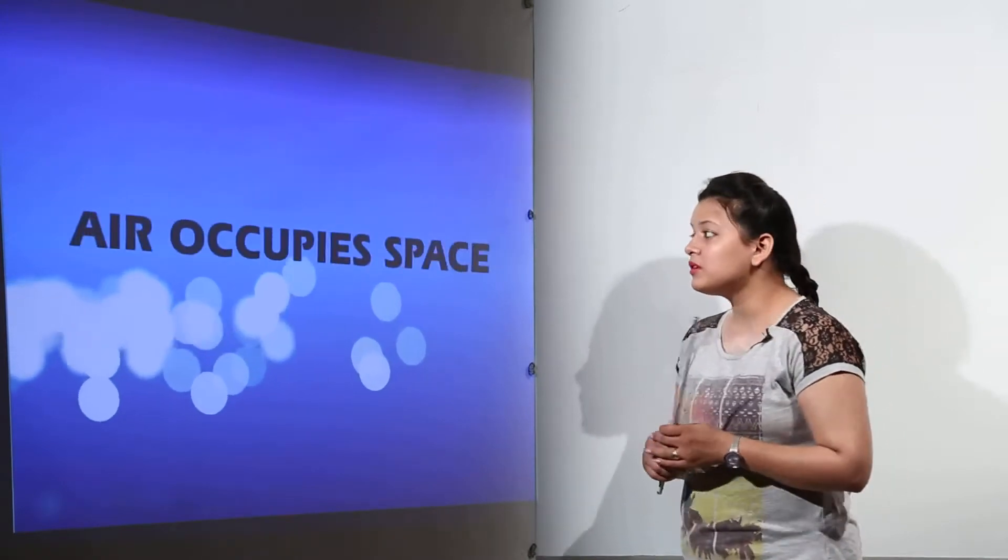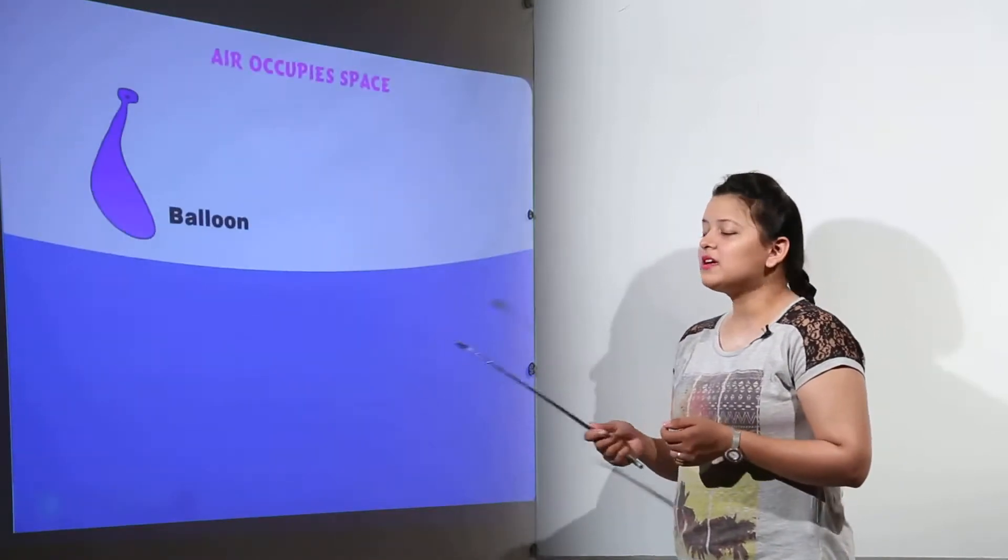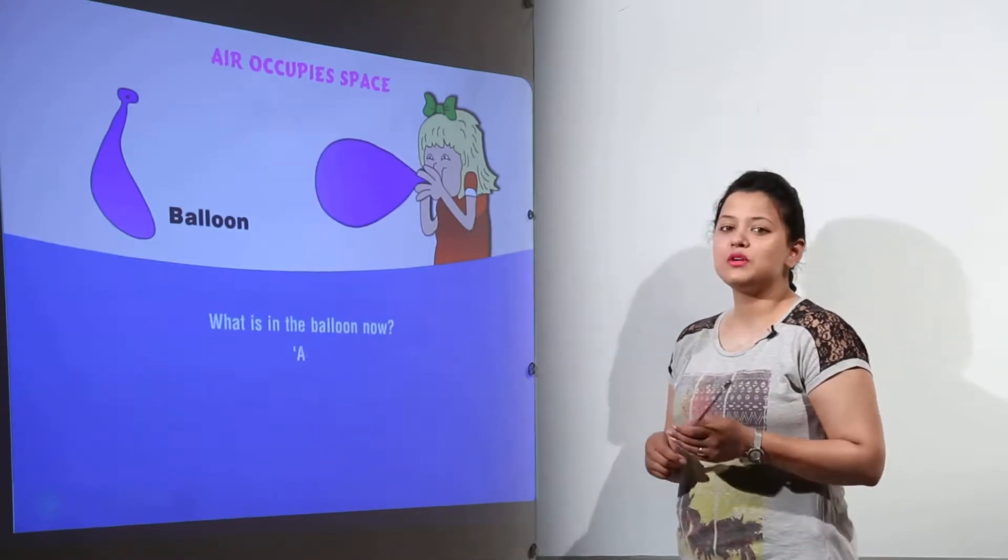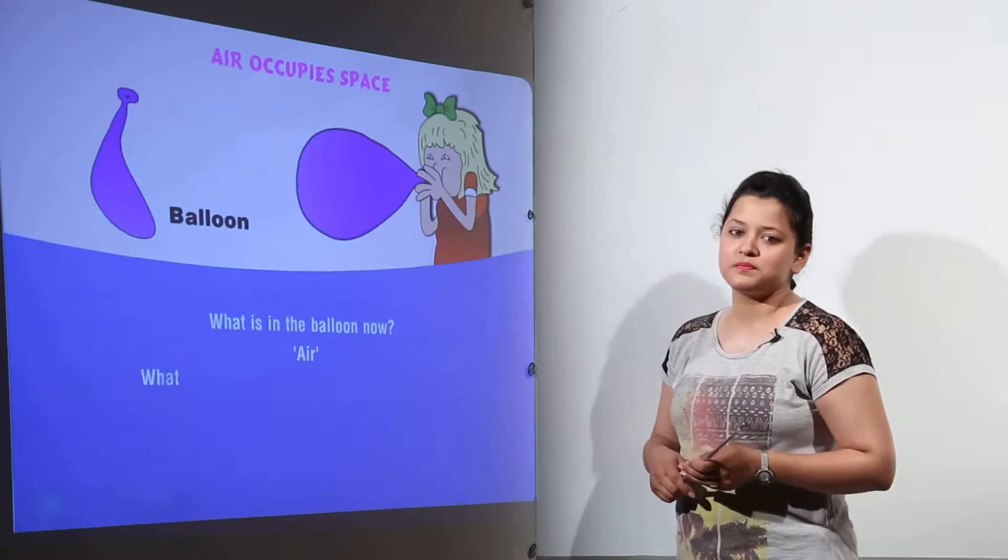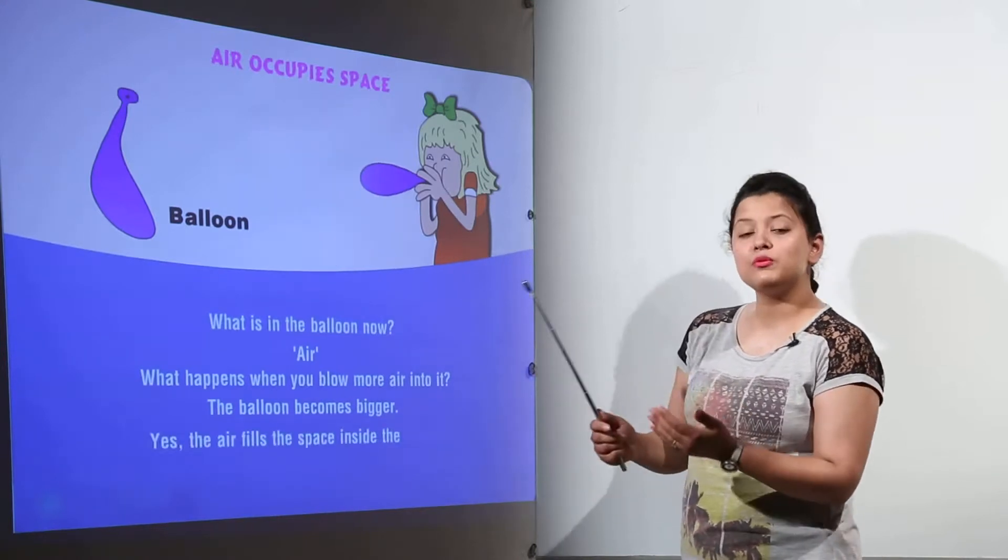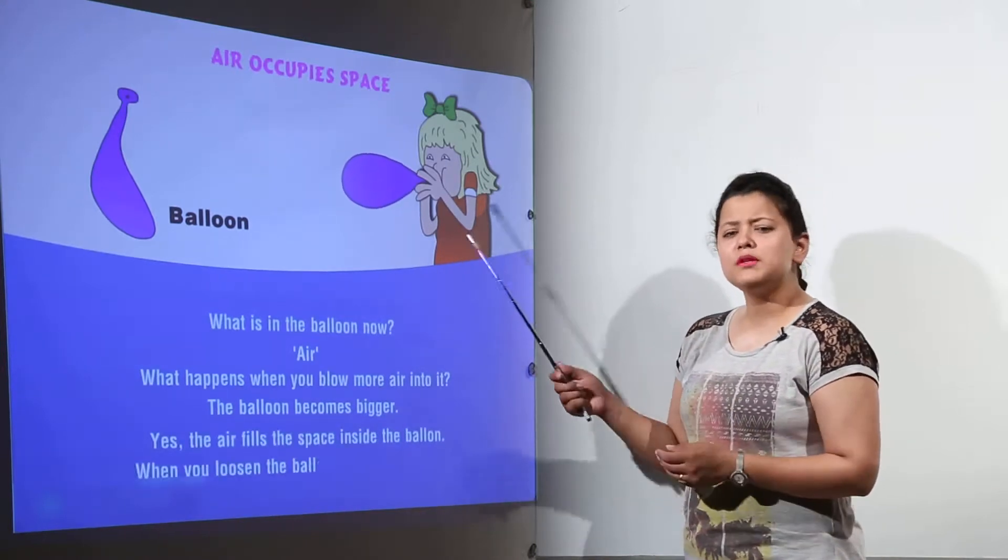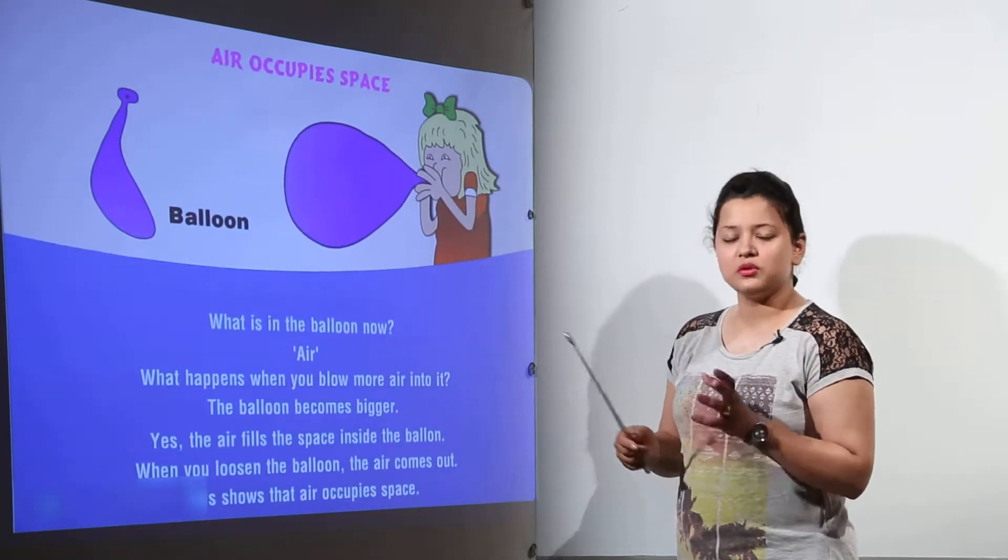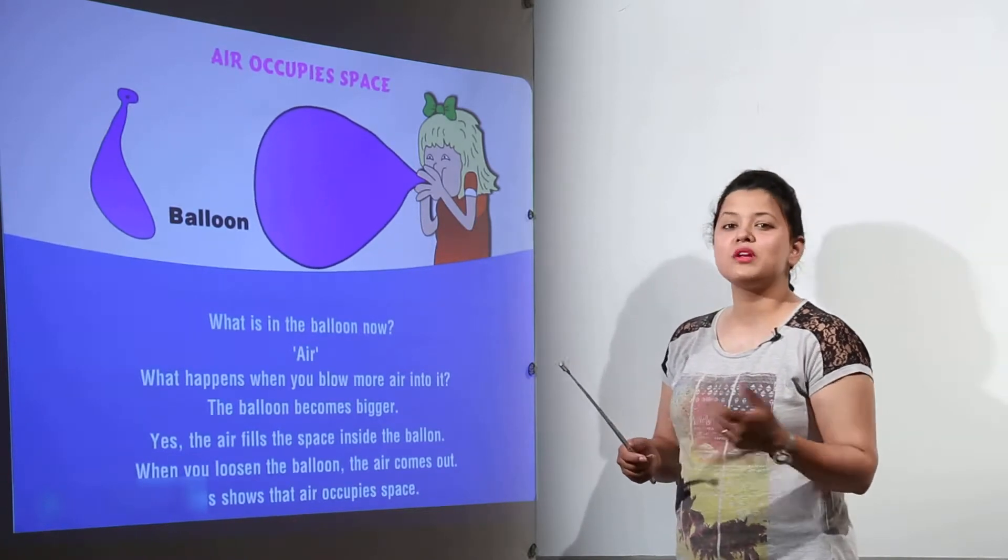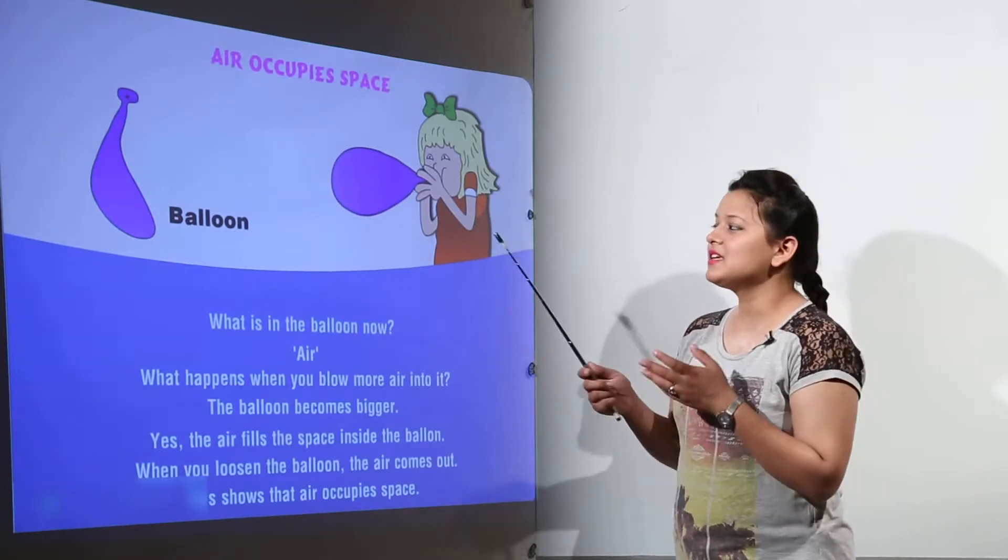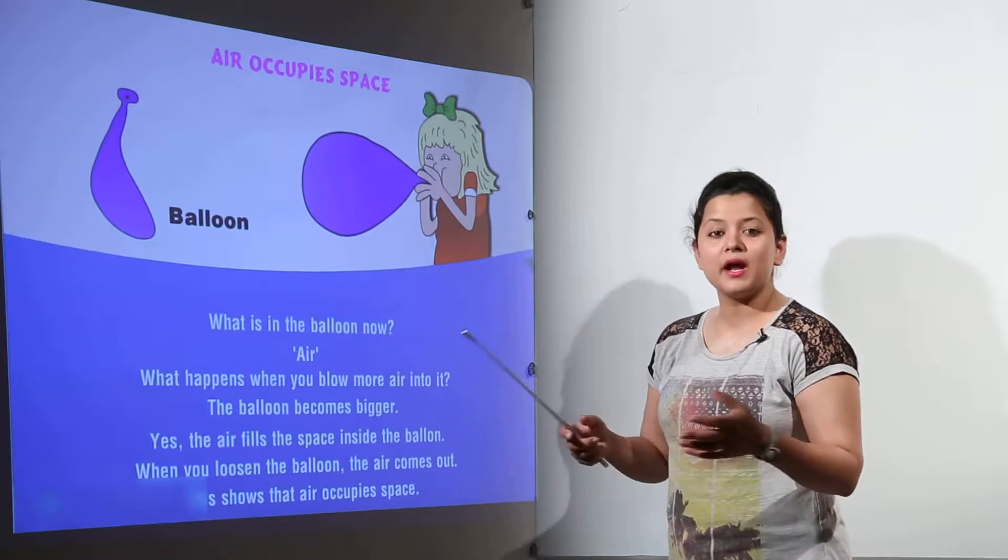Now let us do an experiment to conclude that air occupies space. For this, we can take a simple balloon and start blowing air into it. We notice that as we keep blowing air into the balloon, it increases in size. The moment we stop blowing air, it remains at that size. When we pull out the air, the balloon returns to its original shape. Therefore, it is the air going inside the balloon and expanding it because air occupies space.